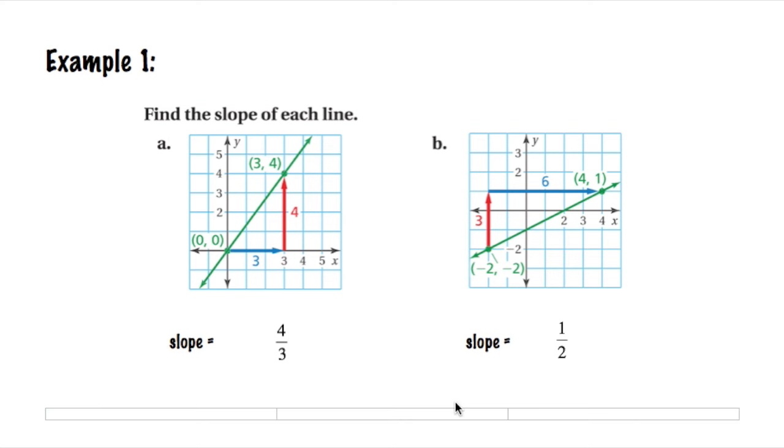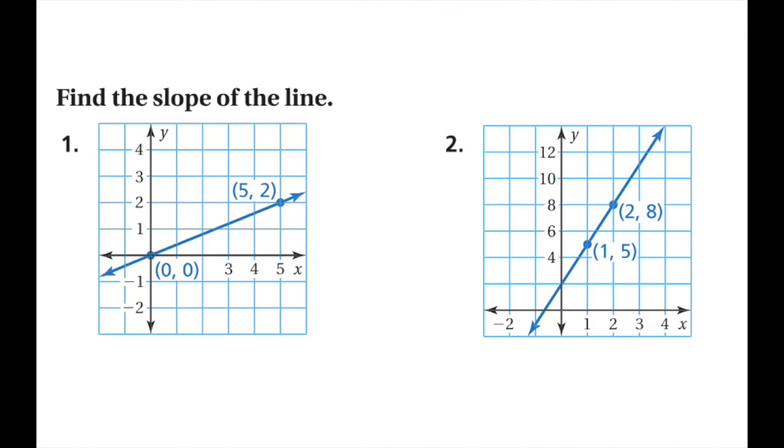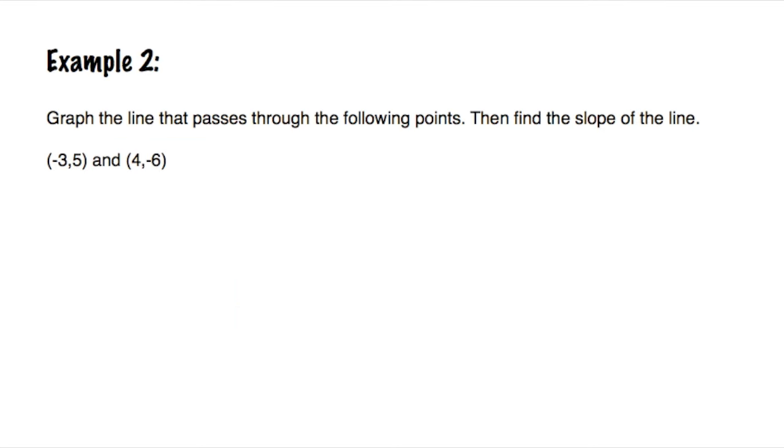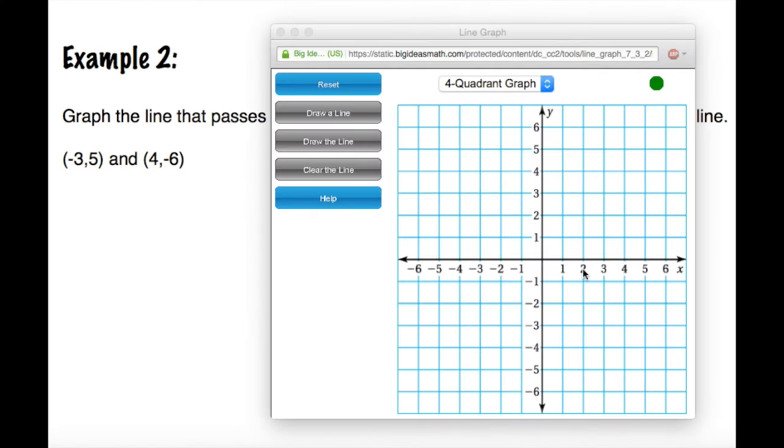Here's some to try on your own. Alright, here's example number 2. It says, graph the line that passes through the following points, then find the slope of the line. So our 2 points are negative 3, 5, and 4, negative 6. So first, let's graph those points.